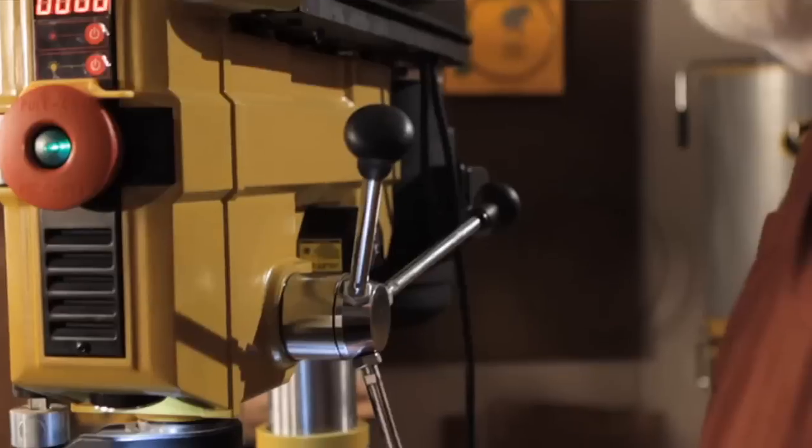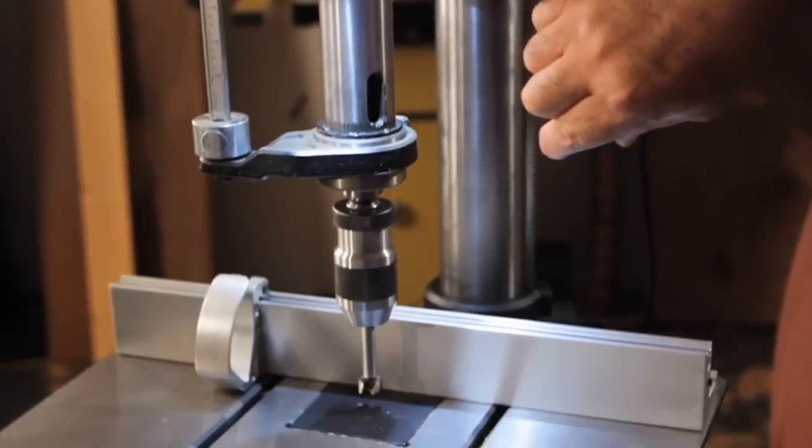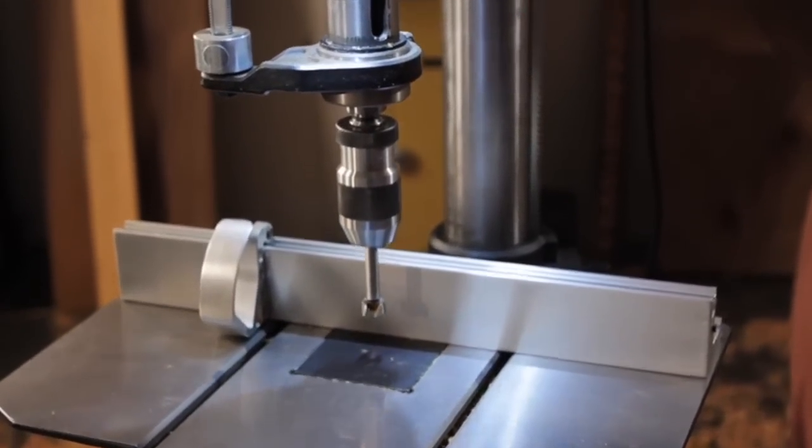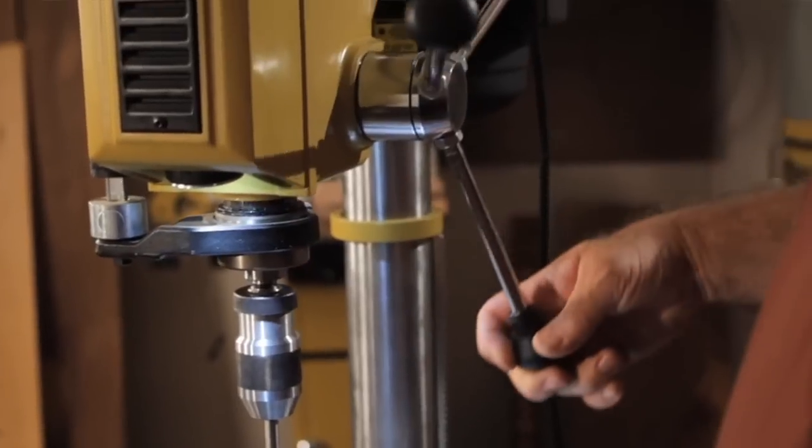If you've used drill presses for any amount of time, you know how important quill travel is. Powermatic has done a great thing with this drill press. You can get a full six inches of quill travel with just one full turn of the handle. It just makes things a lot easier and you spend a whole lot less time turning the handle.